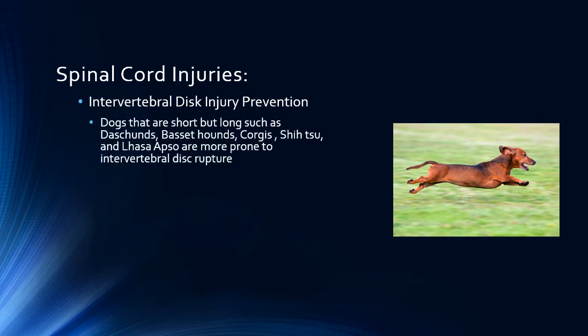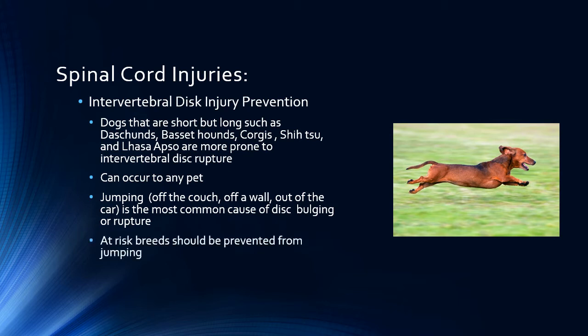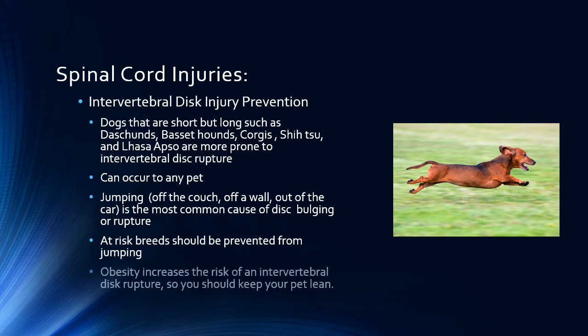Can you prevent intervertebral disc injury in your dog? We have discussed the breeds that are at high risk; however, these injuries can occur in all dogs. The most common reason for a disc to bulge or rupture is jumping — as simple as jumping off a couch or small wall, out of the car, or even going downstairs. If you have a high-risk breed, train your pet not to jump. Do not encourage activities that stress the spine, such as playing tug of war, frisbee, ball catching, or running on slippery surfaces like around pools. The heavier your pet, the more likely they are to injure their spine, so strict ration control is essential to keep them as lean as possible.